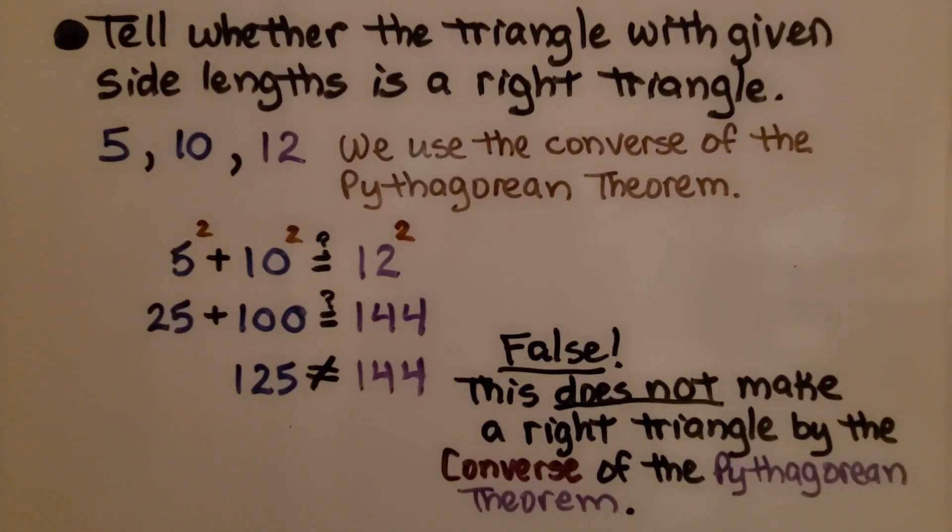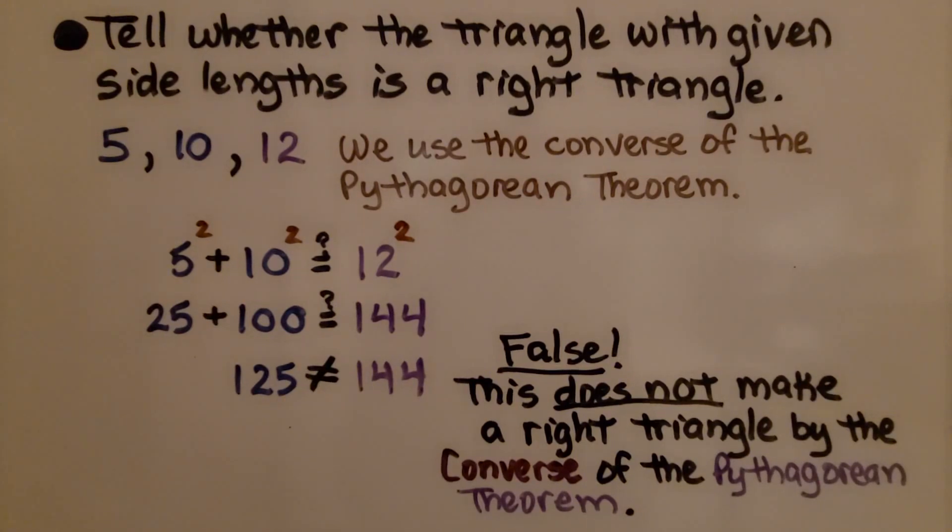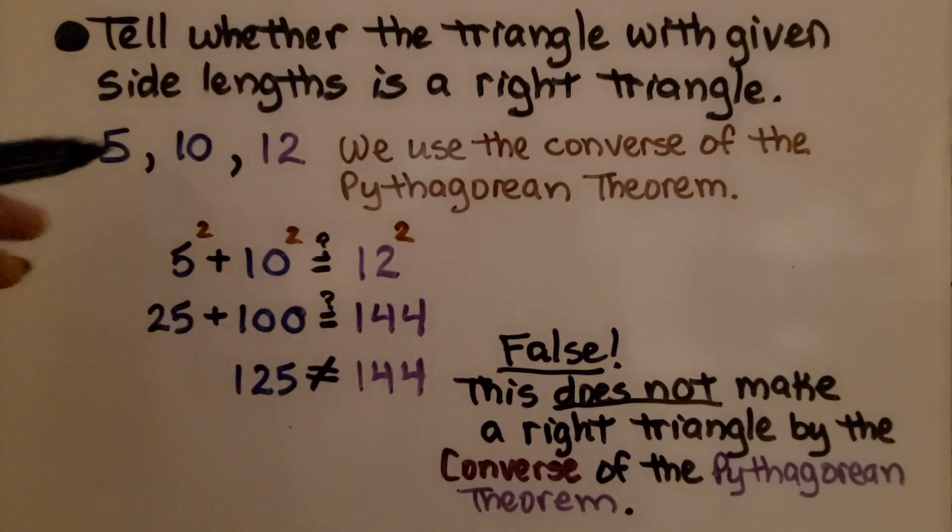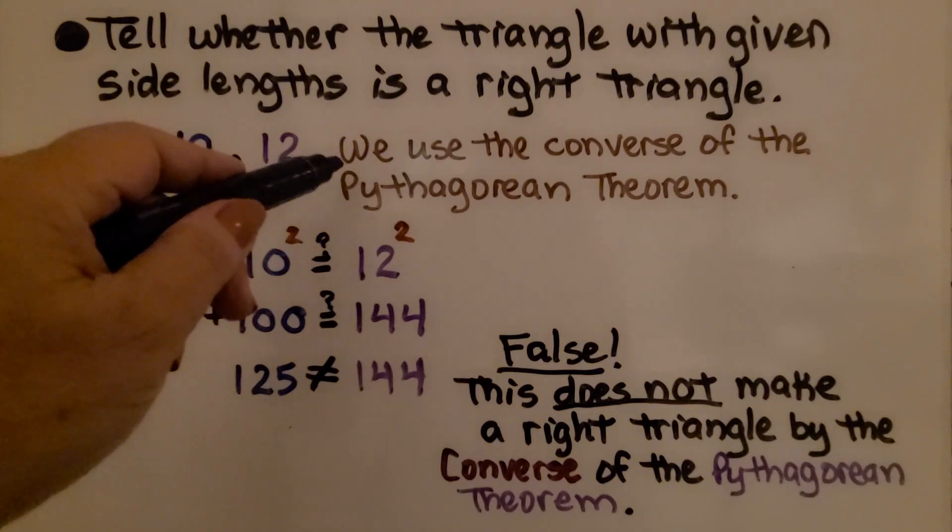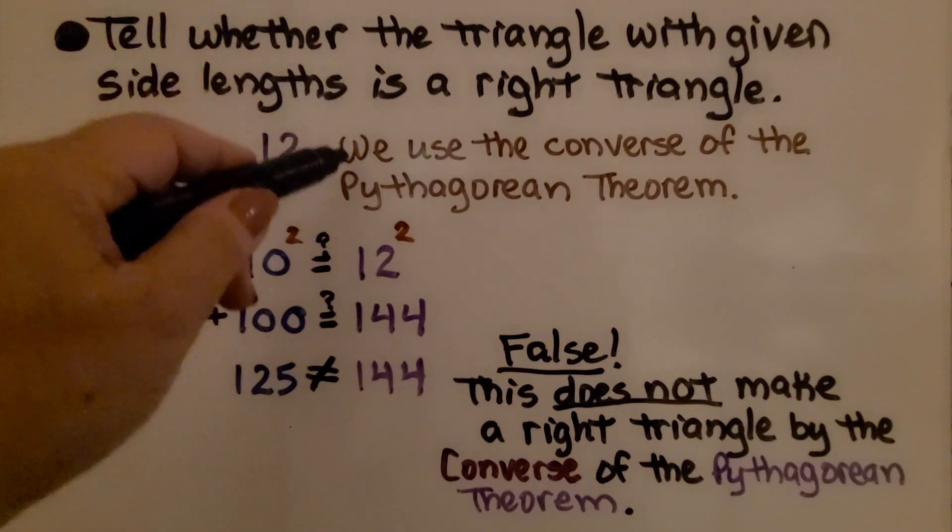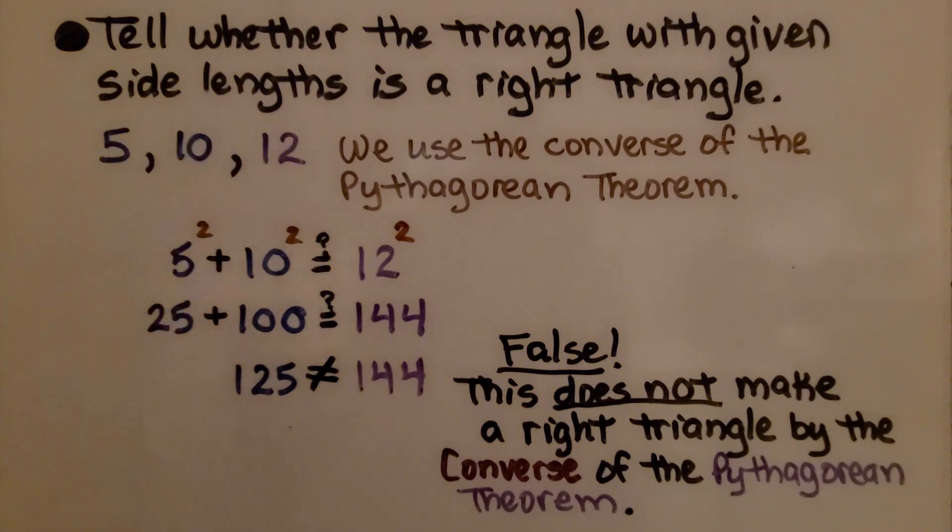Here, we need to tell whether the triangle with given side lengths is a right triangle. We have 5, 10, and 12. We're going to use the converse of the Pythagorean theorem because we're trying to find out if it's a right triangle, and they're giving us the three lengths.